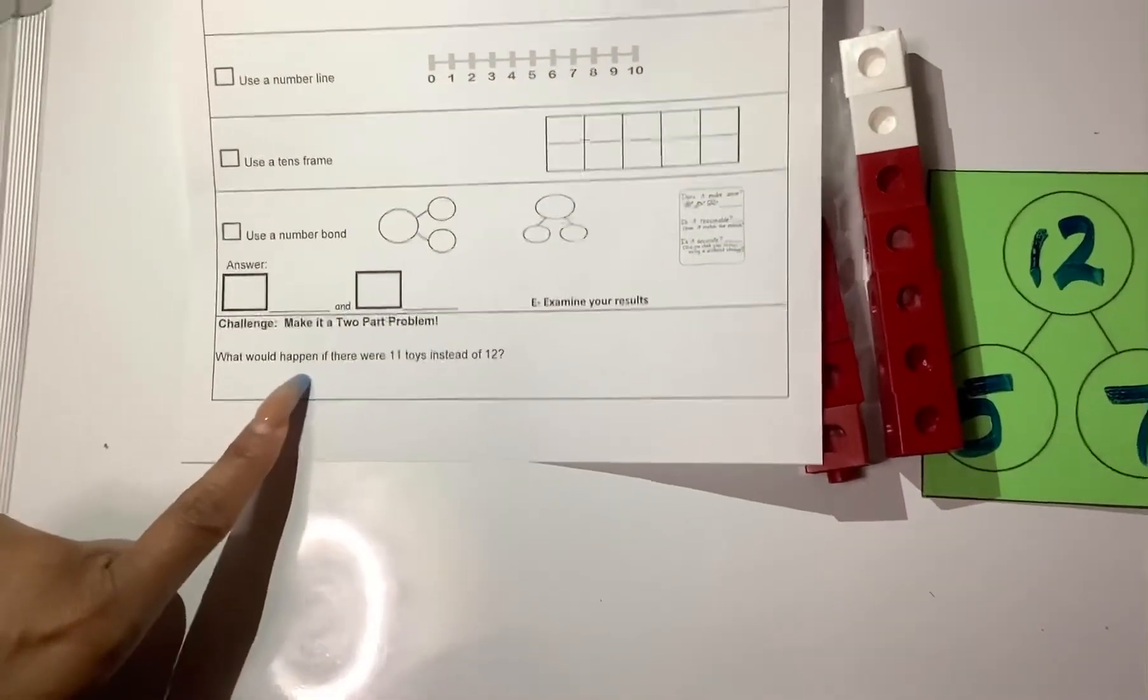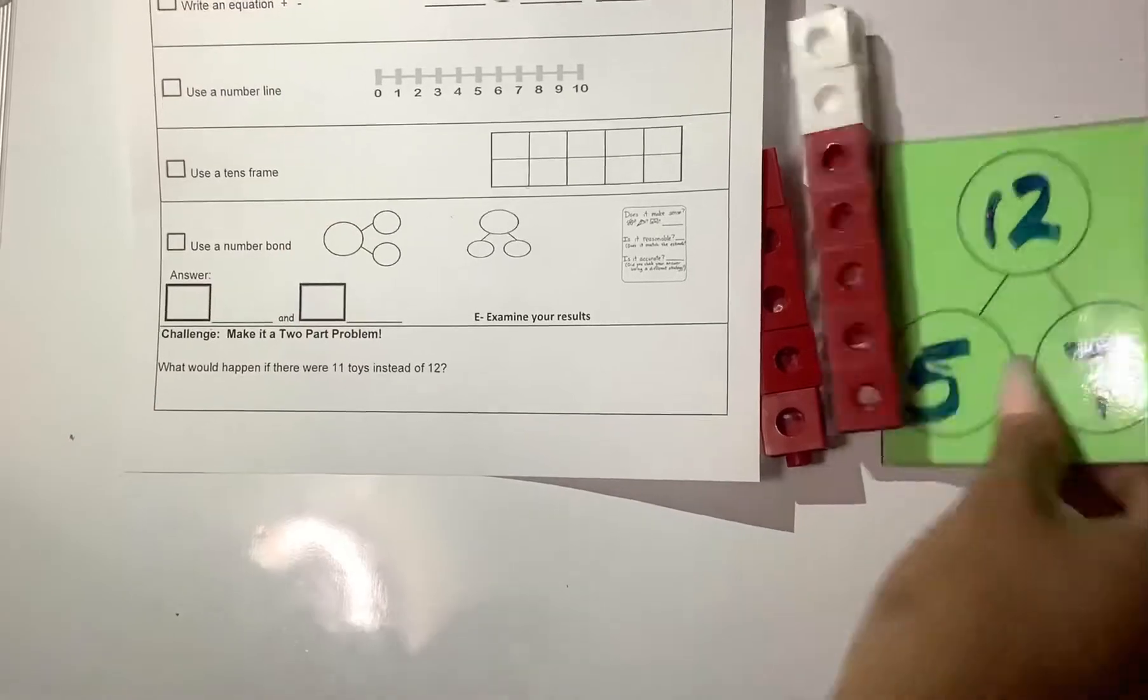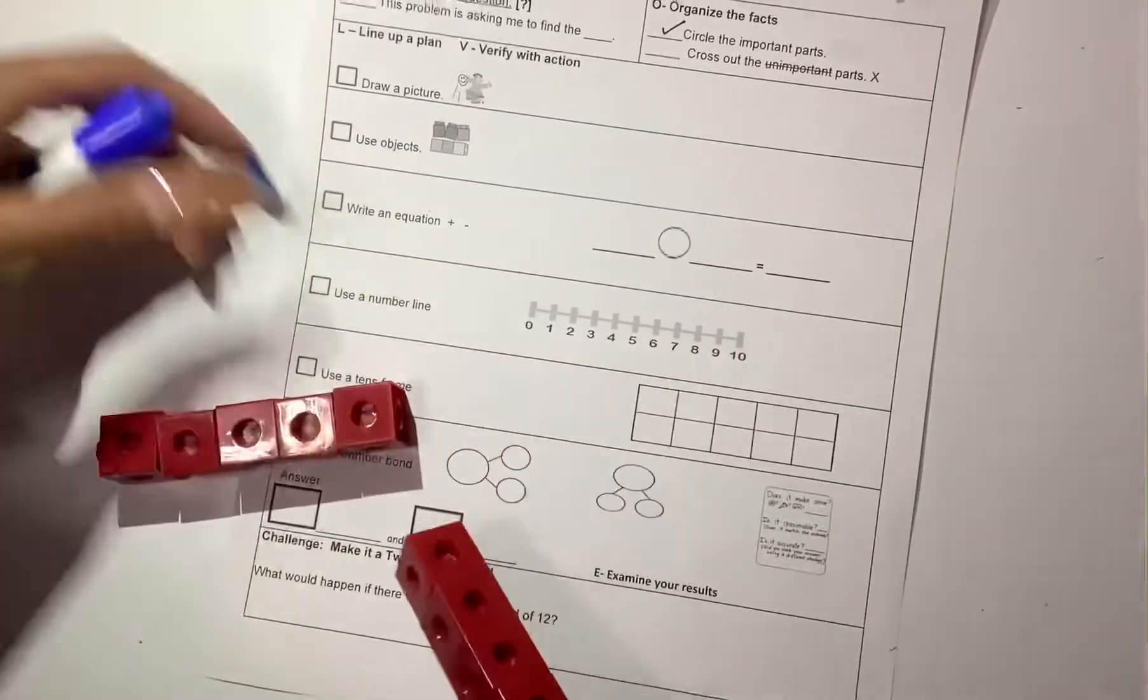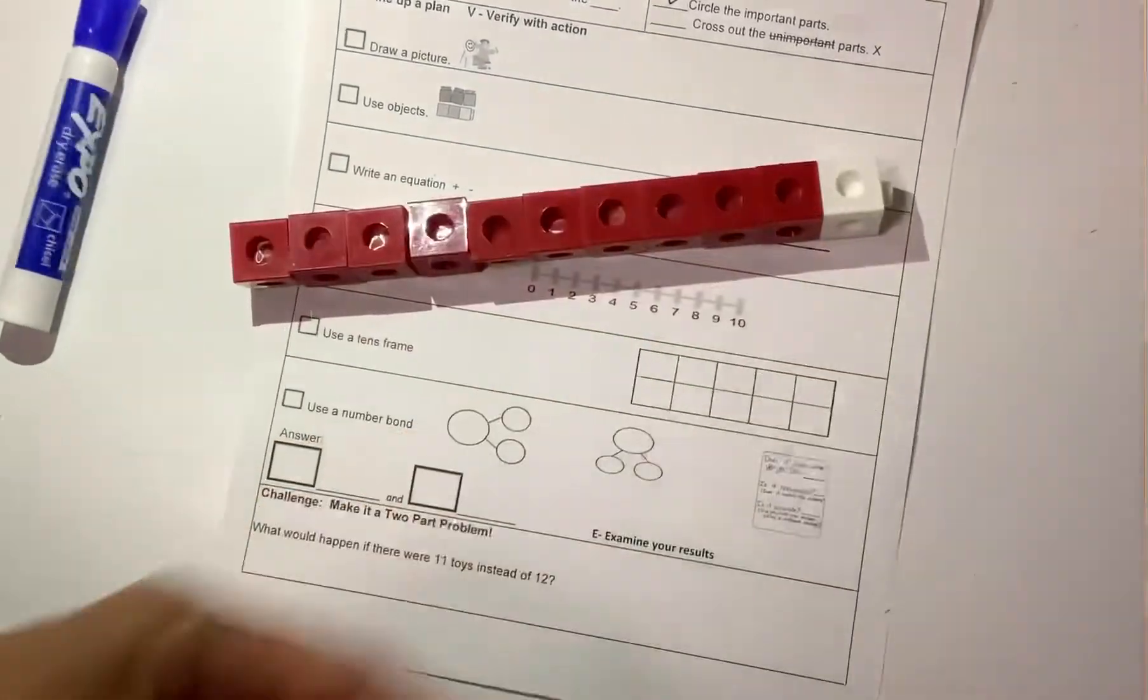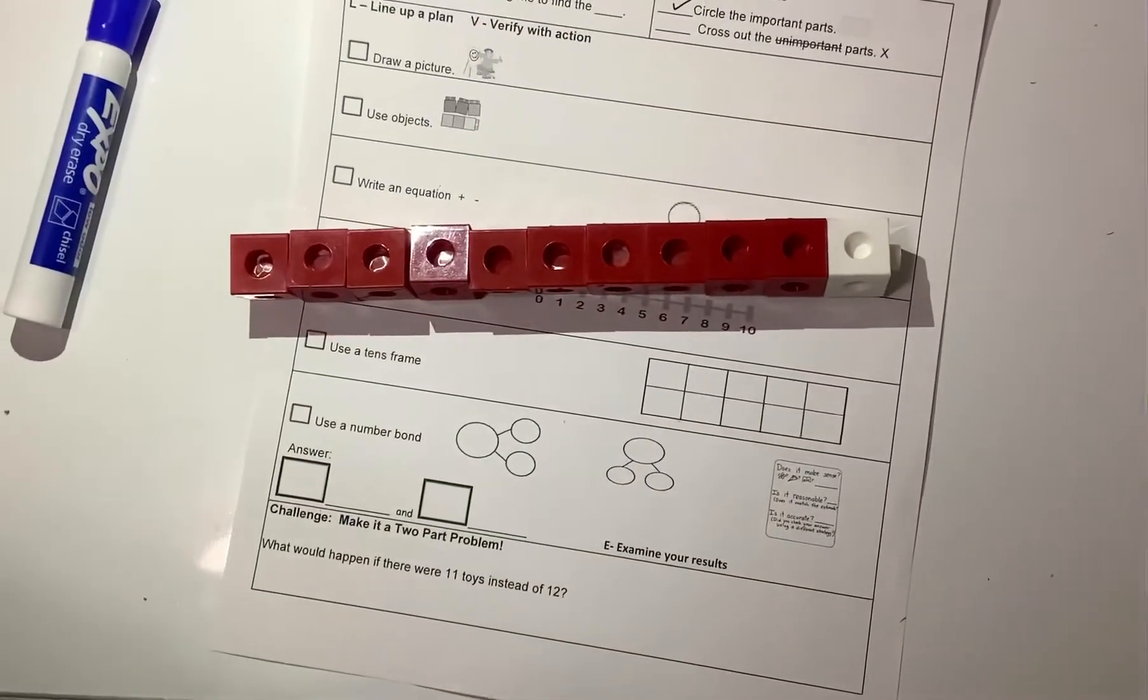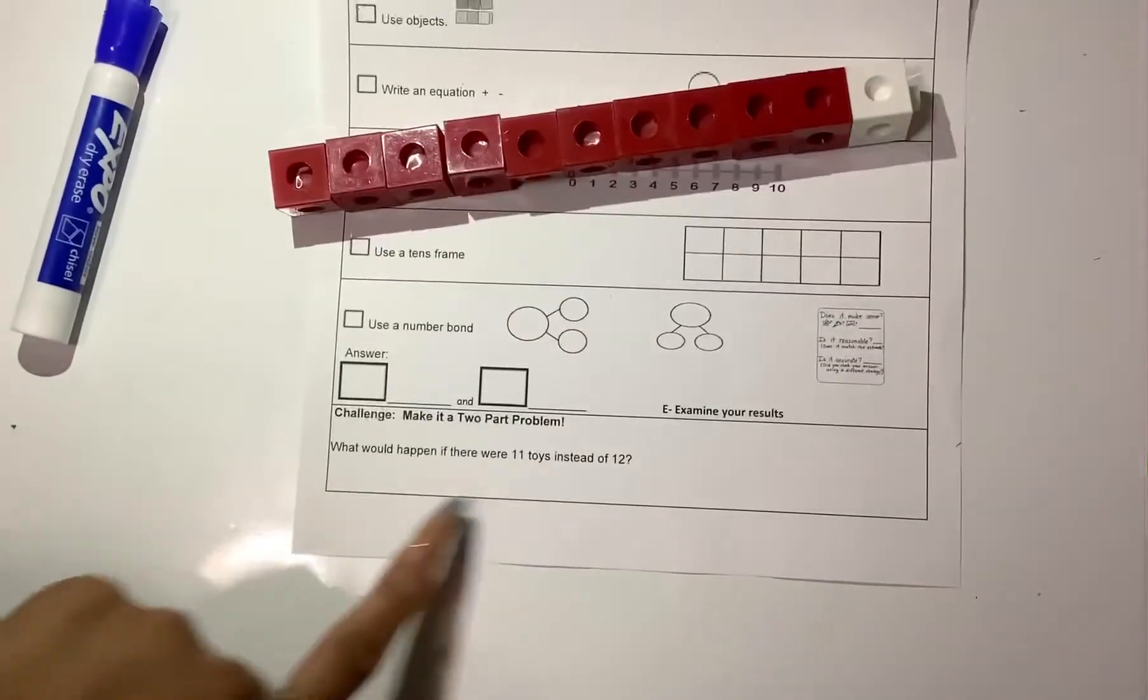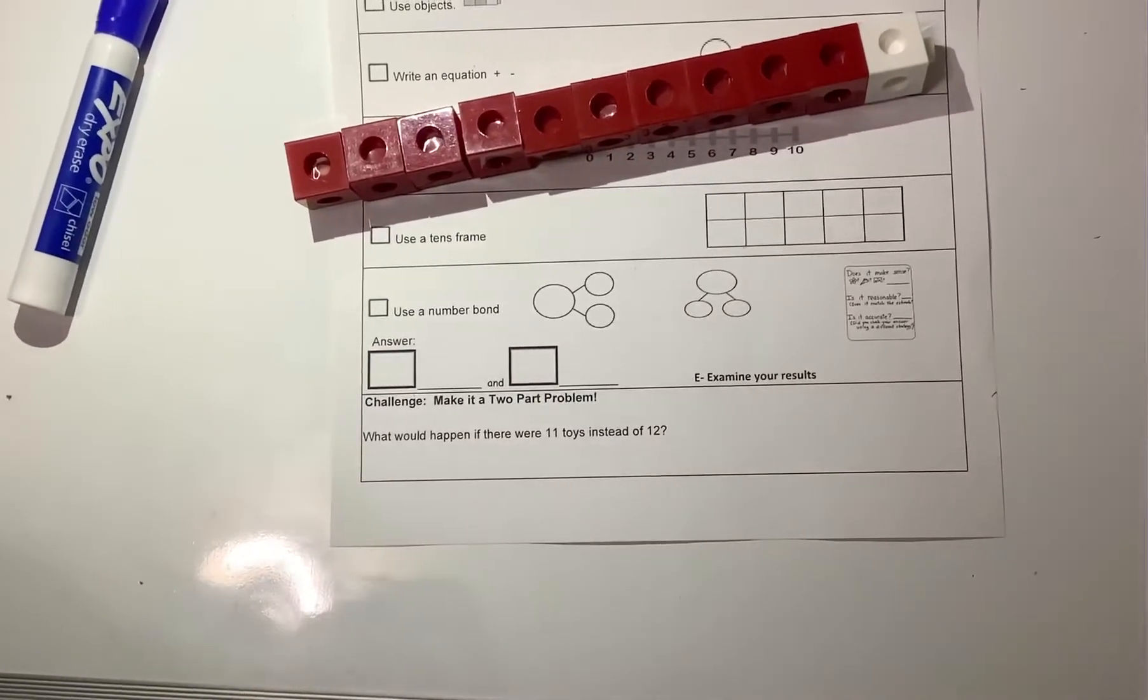What would happen if there were 11 toys instead of 12? So let's imagine that there are 11 toys and not 12. So the first time we had 12. Now 11 is one less than 12. So I'm going to take one off and now we have 11. Now it's your turn. Break your cube stick to show the parts. What two numbers make 11? And you're going to put that in your challenge part. Good luck boys and girls and see you tomorrow.